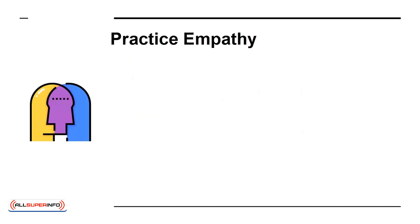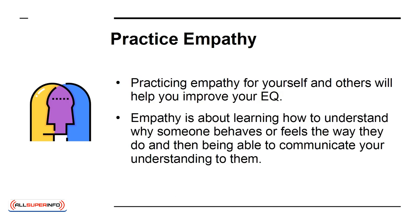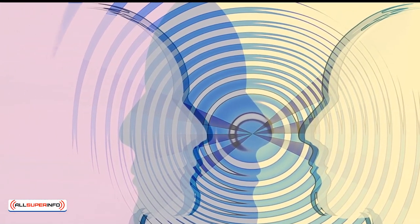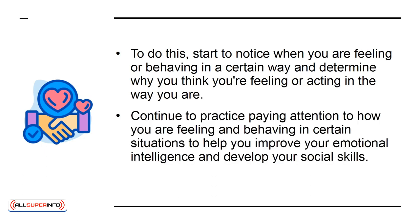Practice empathy. Practicing empathy for yourself and others will help to improve your EQ. Empathy is about learning how to understand why someone behaves or feels the way they do, and then being able to communicate your understanding to them. You can improve your empathy toward others by first practicing empathy with yourself. Start to notice when you are feeling or behaving in a certain way and determine why you think you're feeling or acting in the way you are. Continue to practice paying attention to how you are feeling and behaving in certain situations to help you improve your emotional intelligence and develop your social skills.